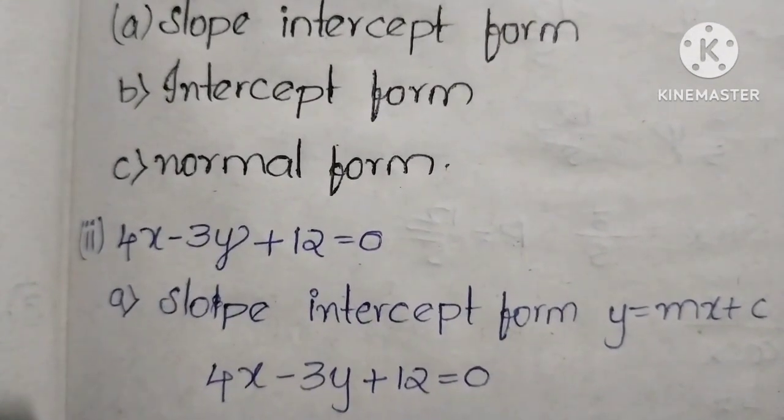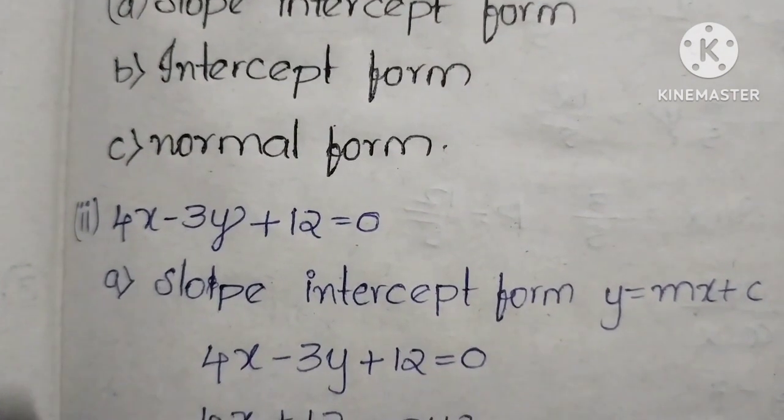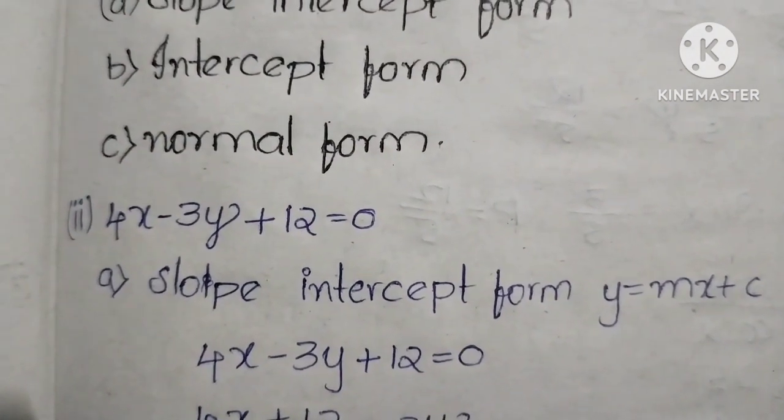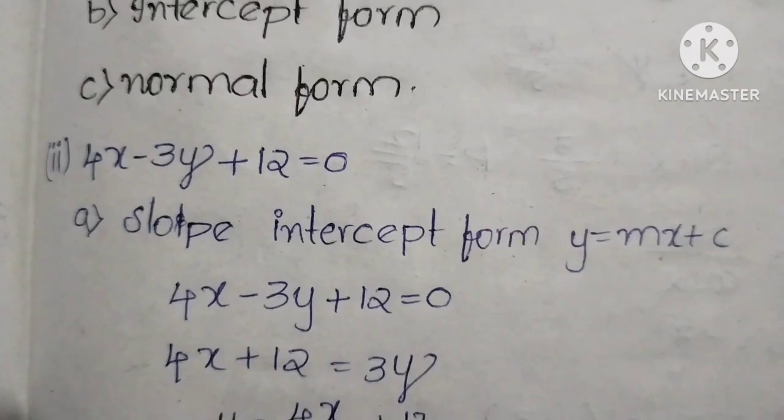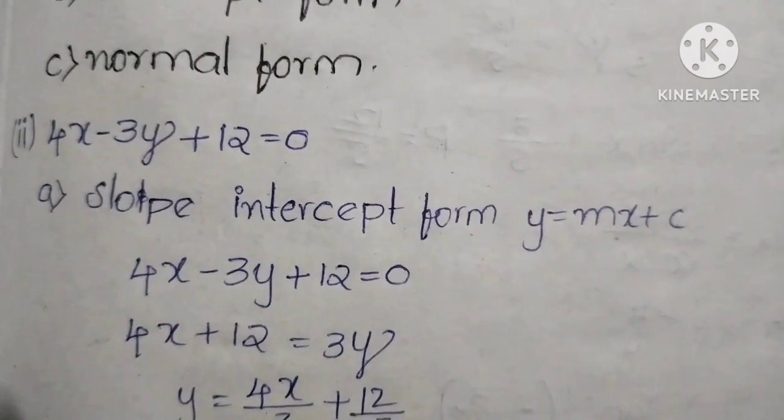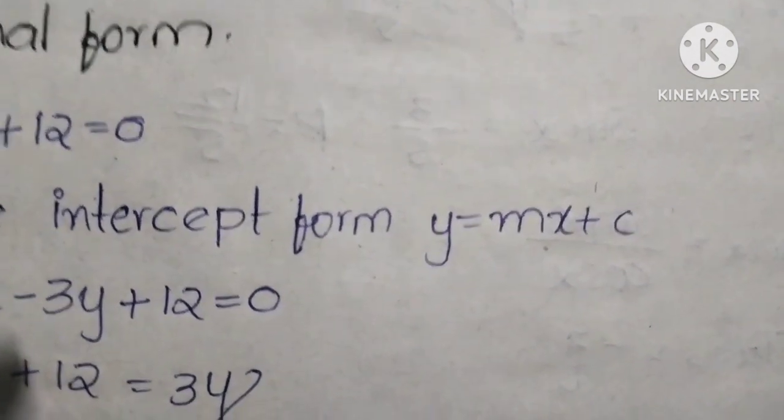Important problem: 4x minus 3y plus 12 equals 0. First, change into slope-intercept form. Slope-intercept form is y equals mx plus c.